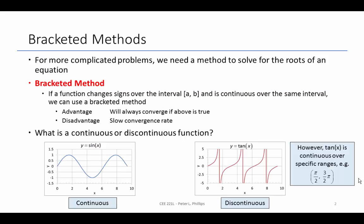For more complicated problems, we need an additional set of tools to find the roots. One such tool is the bracketed method. It works by the fact that if a function changes sign over an interval from A to B and is continuous over that same interval, we can bracket the root. The advantage is that it will always converge if the above statements are true—the interval changes sign and it's continuous. But the disadvantage is that it might be slow.